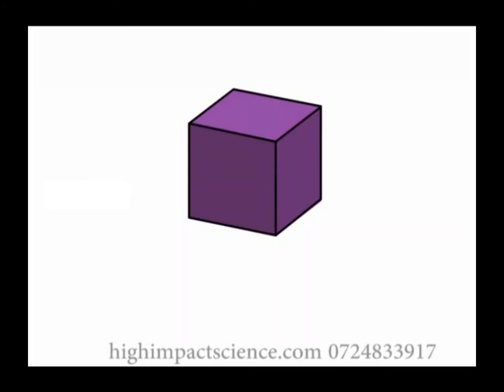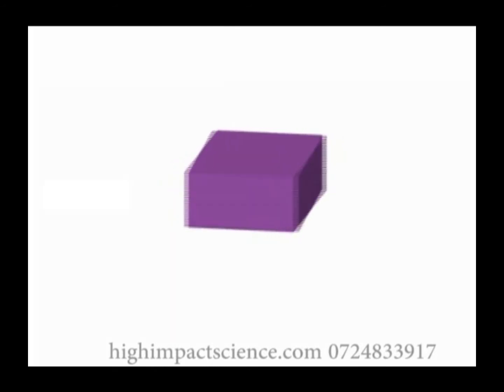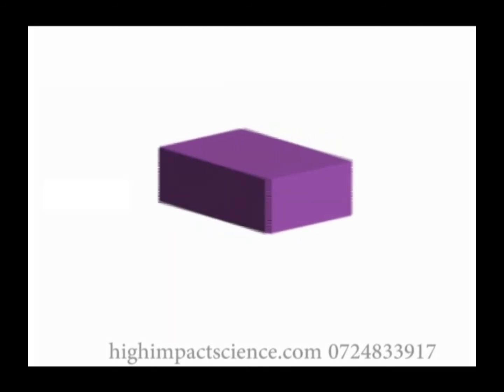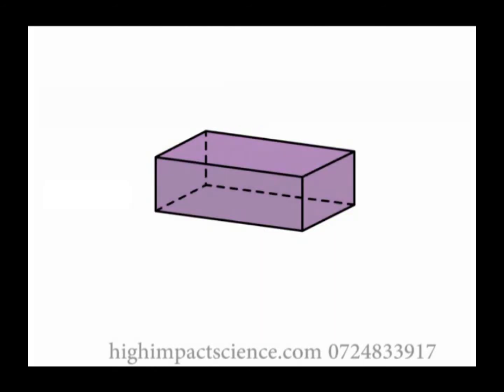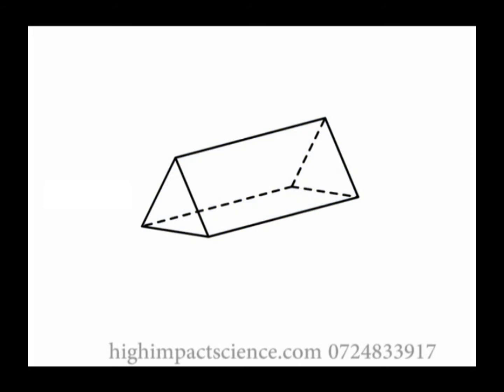In this cube, the edges visible from this angle are drawn with continuous lines. Those behind are invisible and are therefore drawn in broken lines. The cuboid is similar to a cube, except that it has rectangular faces. A triangular prism will be drawn as shown on your screen.